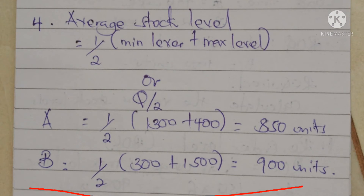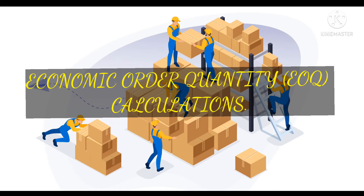For product B, it's a half of (minimum level of 300 plus maximum level of 1,500). When we add and divide by two we get an average stock level of 900 units. So the two average stock levels are: product A — 850 units, product B — 900 units. That concludes the stock level calculations.